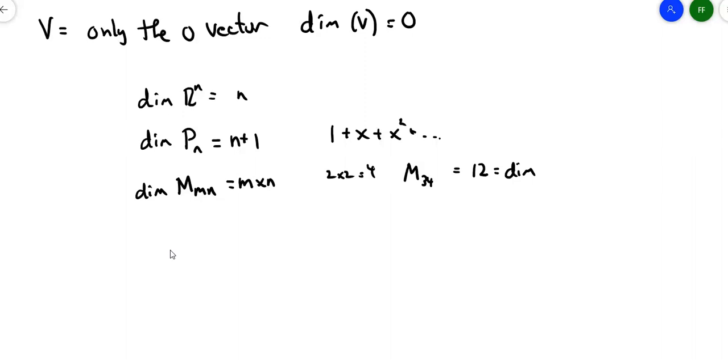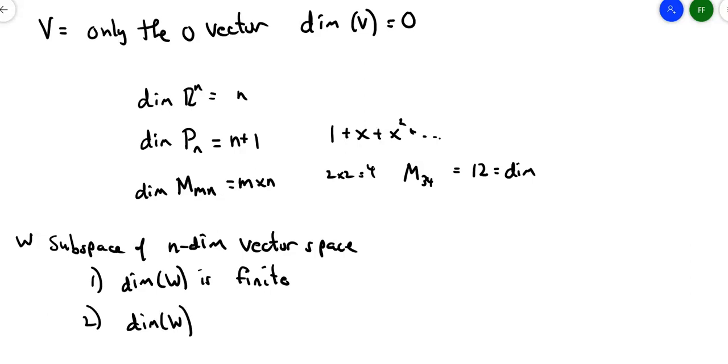So what if you have a subspace of an n-dimensional vector space? There's two facts that you'll be able to pull out of this. One is that the dimension of that subspace is finite. Because if you have an n-dimensional vector space, then you're already constrained by some finite value. And that's where this second one is going, is that the dimension of the subspace has to be less than or equal to the dimension of the original vector space. So it could be the same, but it certainly can't be any more.